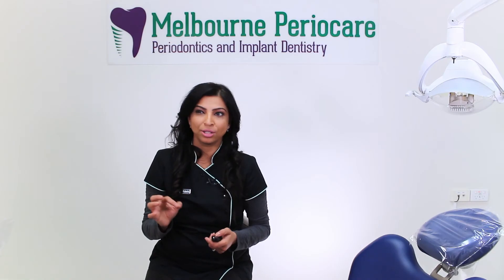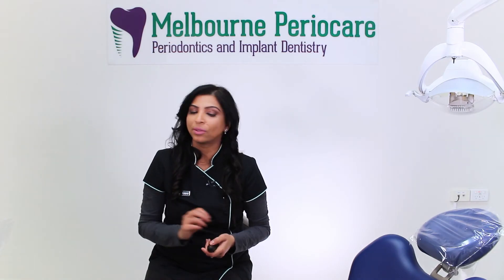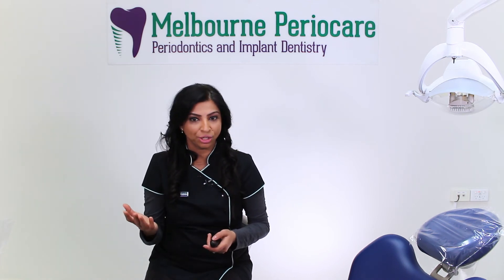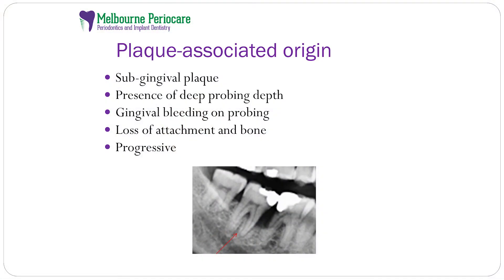The plaque-associated origin is one of the most common causes of furcation involvement. It is caused by subgingival plaque accumulation, it's quite progressive, it can cause loss of attachment and bone, and generally there is a deep probing pocket depth and bleeding on probing associated with this issue.